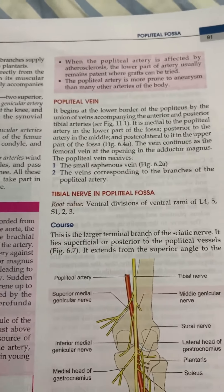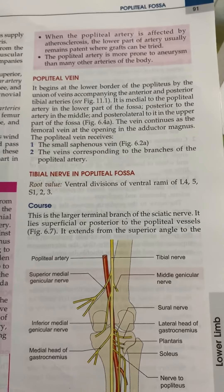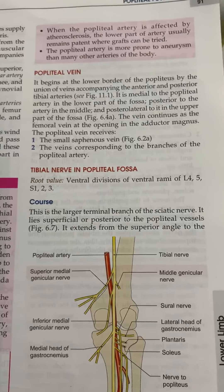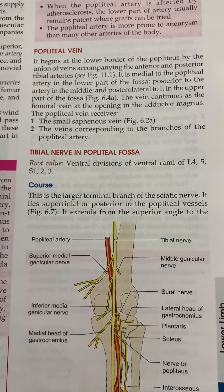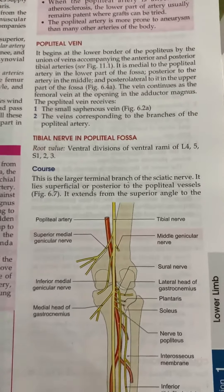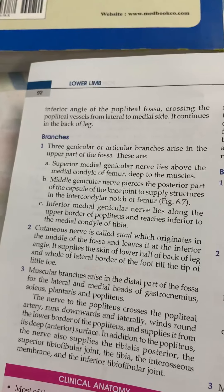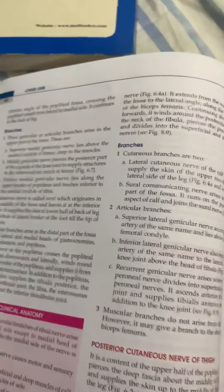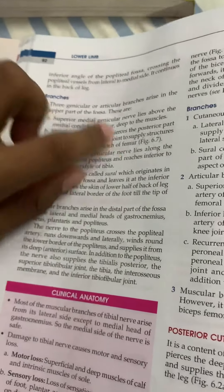The tibial nerve has root values L4, L5, S1, S2, S3 — all ventral. It is the larger terminal branch of the sciatic nerve. It extends from the superior angle to the inferior angle of the popliteal fossa, crossing the popliteal vessels from the lateral to the medial side.